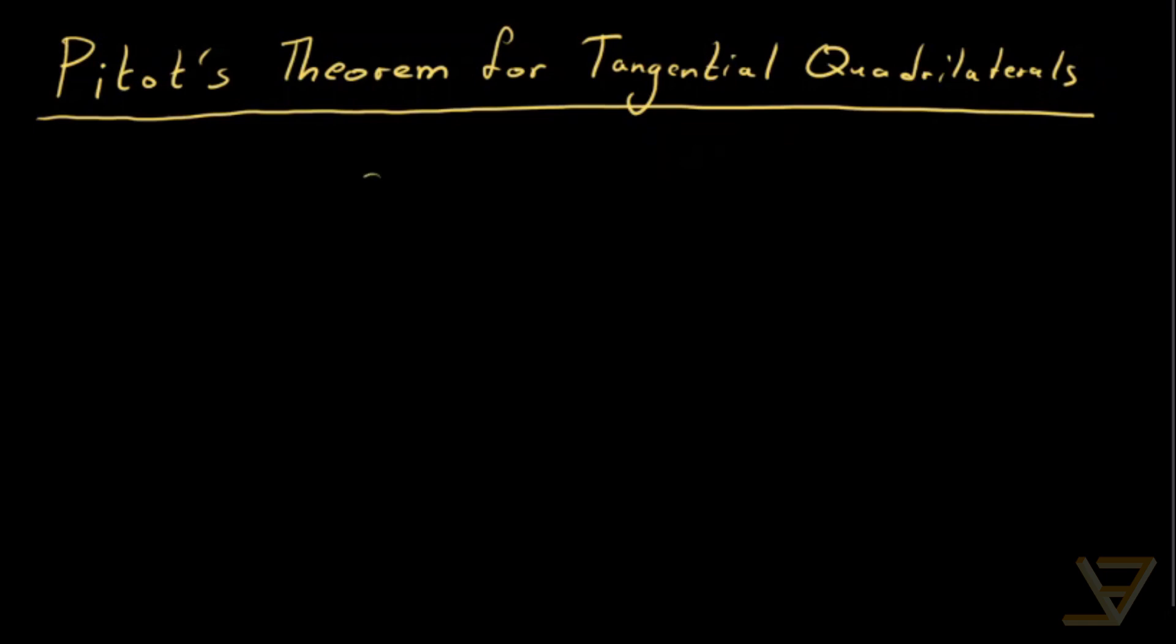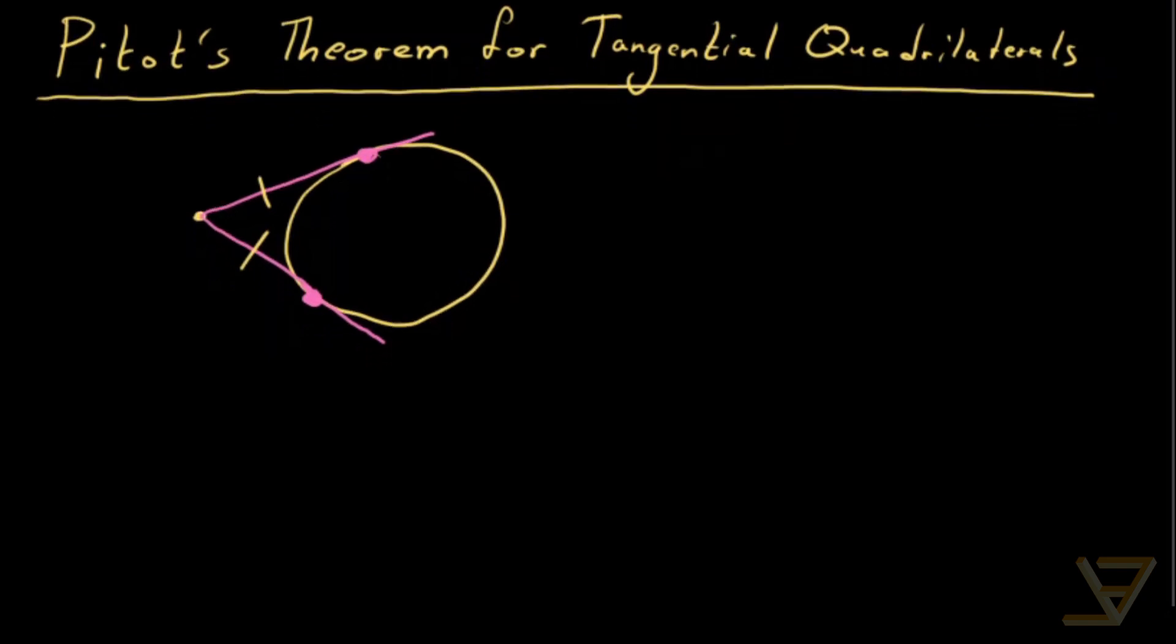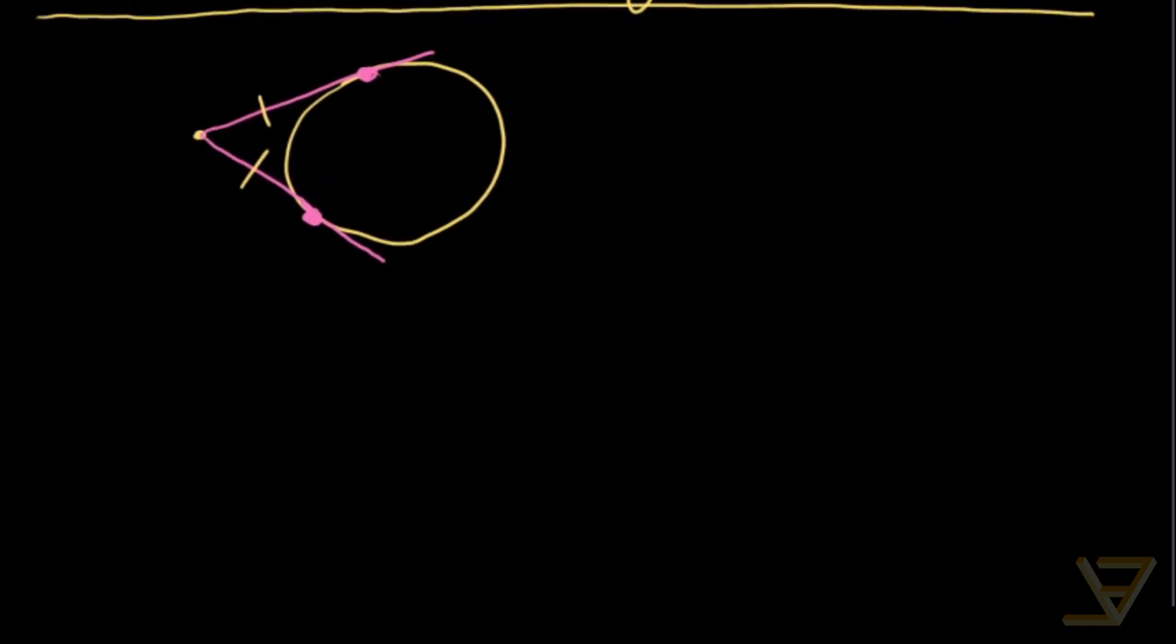We're going to need a certain property of tangents to a circle. So let's say we've got a circle here and we've got a point outside of it, and we draw the two tangents that we can draw from this point to the circle. What it holds is that the two tangent segments have the same length. This is a property that's true in general for tangents to a circle. So we're going to be using this fact to prove Pitot's theorem.